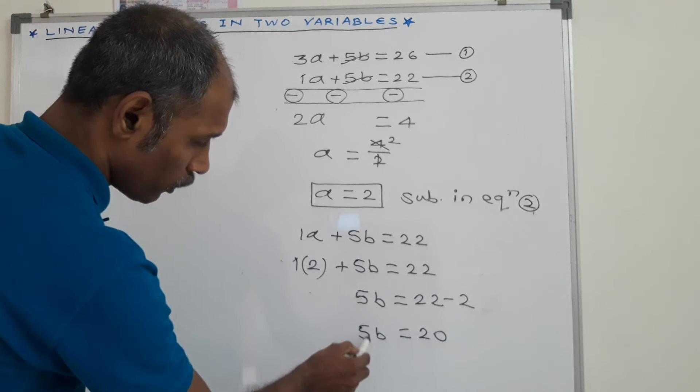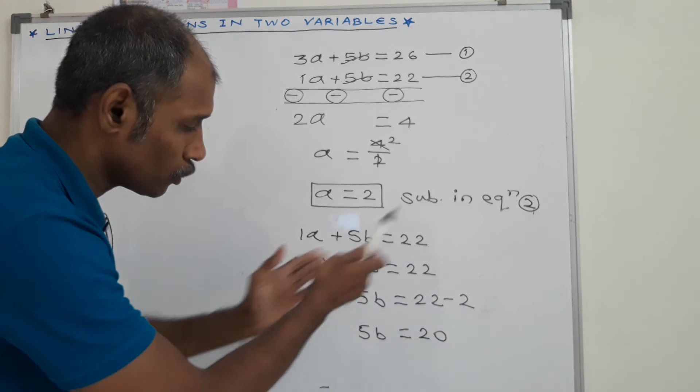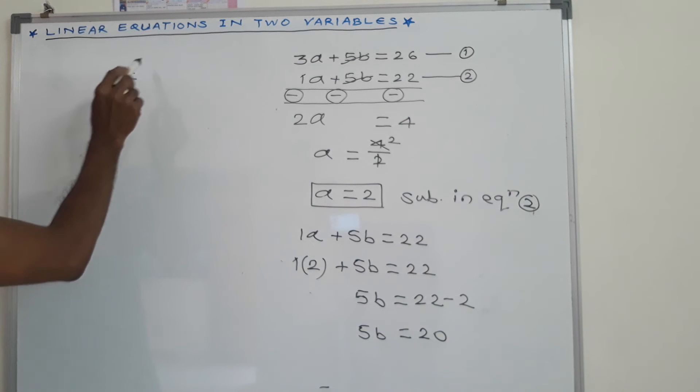Now we want value of this variable B, therefore we take this 5 to the right side. B is equal to 20 upon 5.